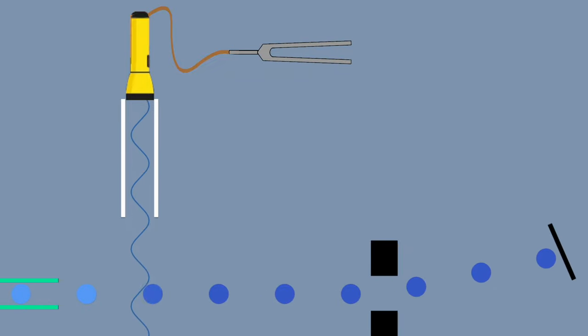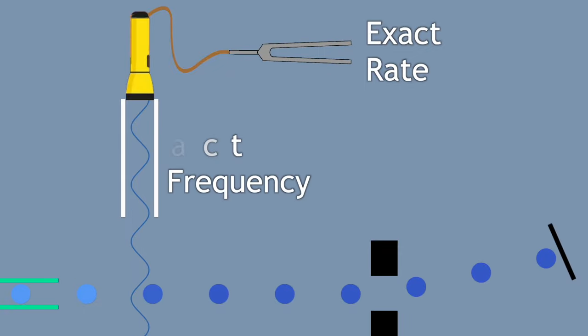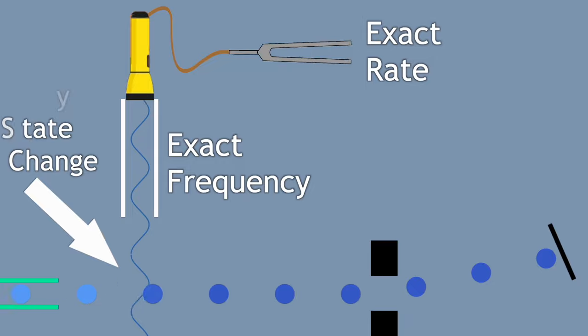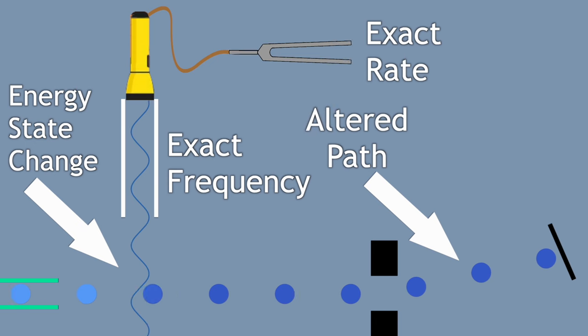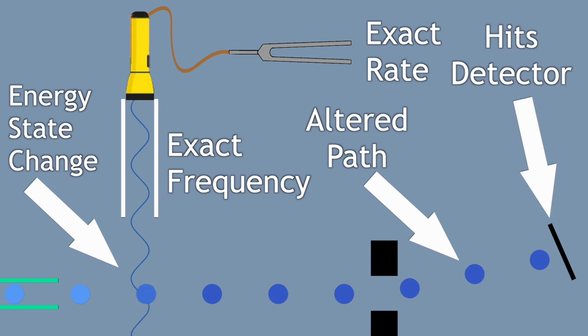To simplify, if everything is in order, then the quartz will be vibrating at the exact correct rate, which means that the microwave frequencies will shine at exactly the correct frequency, which means that those low-energy state atoms will jump to high-energy state atoms, which means that they will be altered through the path of the magnet, and they will hit the detector. This is what happens when everything is in order.